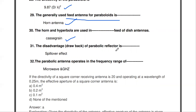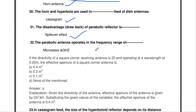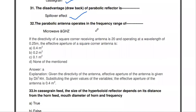The disadvantage of the parabolic reflector is the spillover effect - that is the disadvantage. The parabolic antenna operates in the frequency range of microwave and gigahertz frequencies. That is, in the range of gigahertz, we use the parabolic antenna.